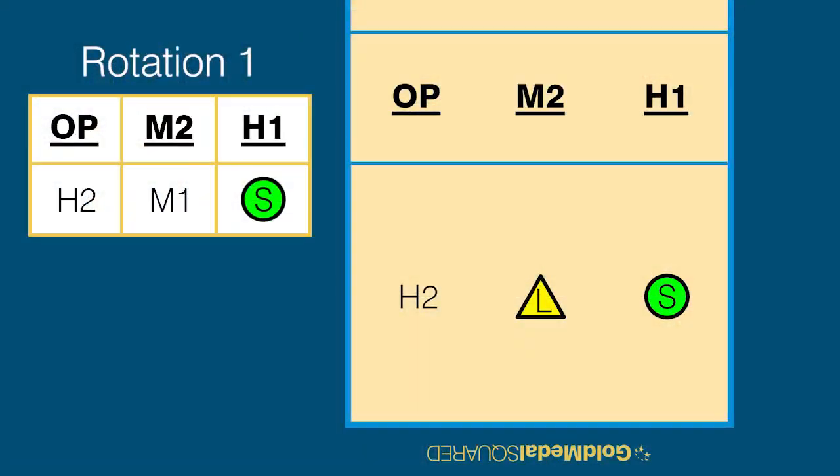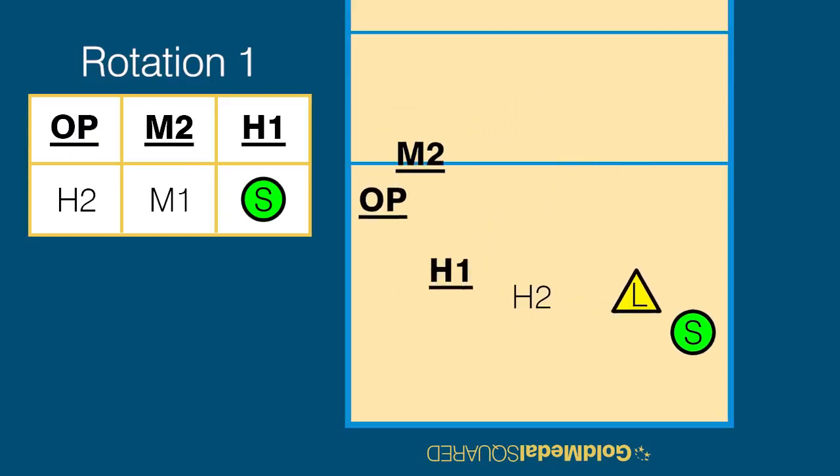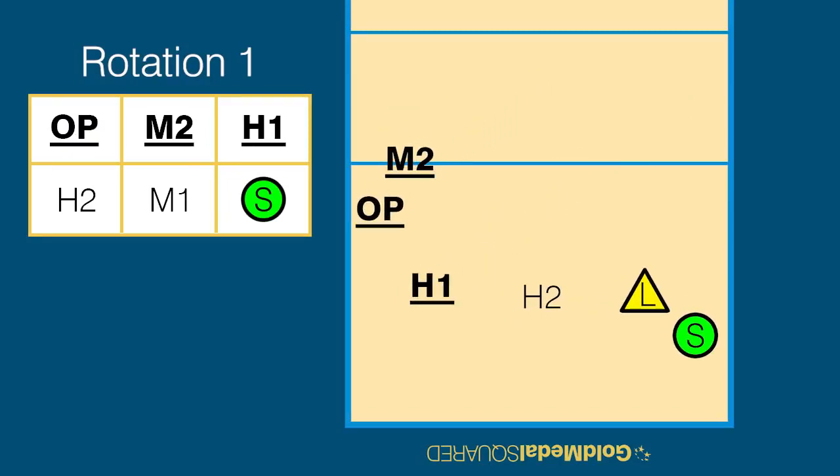Another common Rotation 1 formation is called a stack. All the offensive players will stack on the left side of the court. The H1 passes in Zone 5 and hits a go. Then the combination of the opposite and the middle will hit a middle attack and a slide. Depending on the offensive strengths of these two players, one of them will hit out of the middle, and the other will hit a slide.